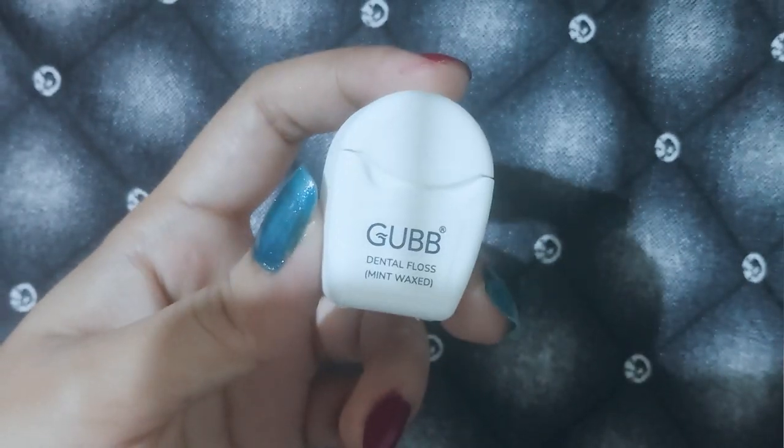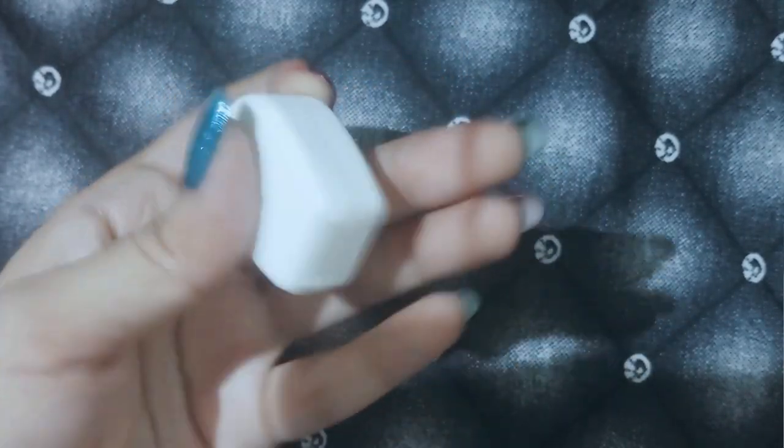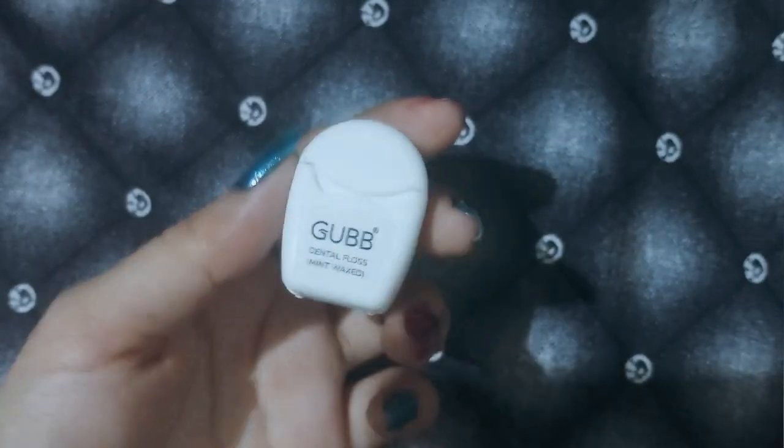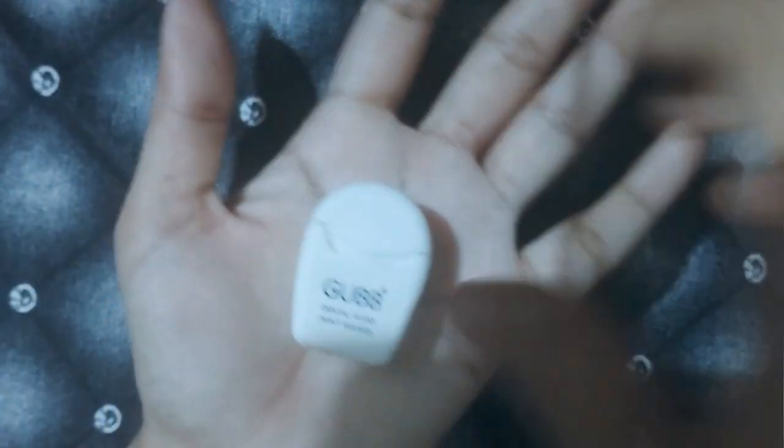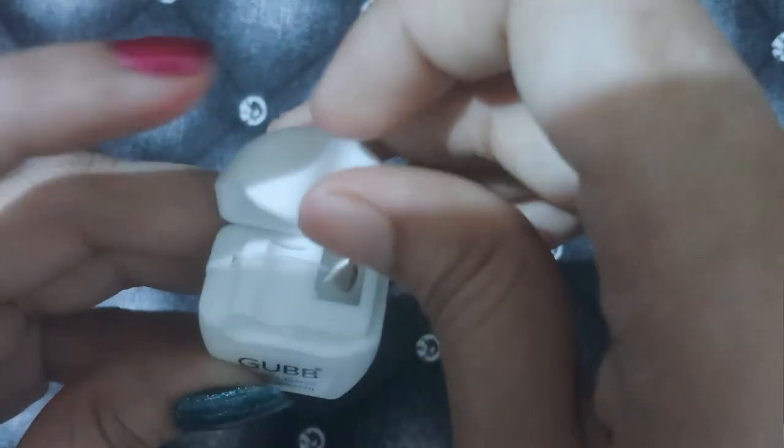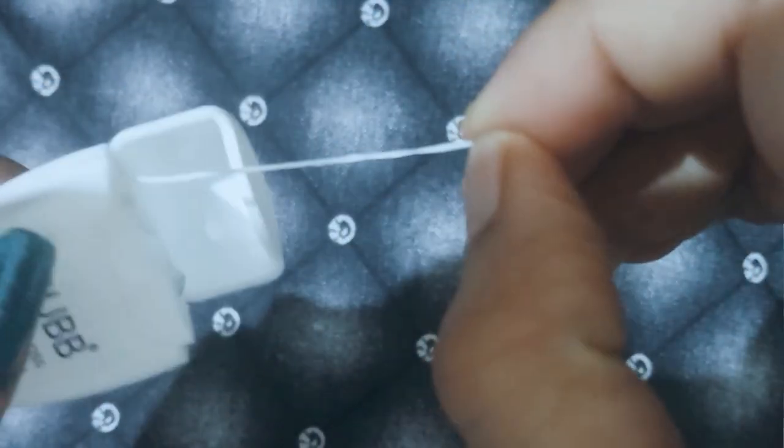Hello everyone, welcome to another new video. I hope all are doing well. Today I am going to review Gubb dental floss thread for the teeth, mint waxed. The price of this is 75 rupees.